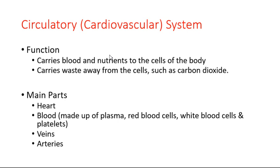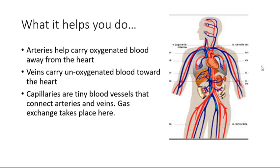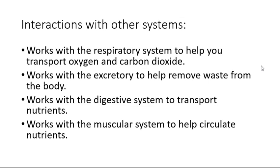We have the circulatory and respiratory systems. The circulatory system — also called the cardiovascular system — is responsible for transporting blood, oxygen, and nutrients throughout the body. It includes the heart, blood vessels, and blood: specifically veins and arteries. Blood is made up of plasma, red blood cells, white blood cells, and platelets. Arteries carry oxygenated blood away from the heart; veins carry deoxygenated blood towards the heart. It works with the respiratory system to transport oxygen and carbon dioxide, with the excretory system to remove waste, and with the digestive system to transport nutrients.